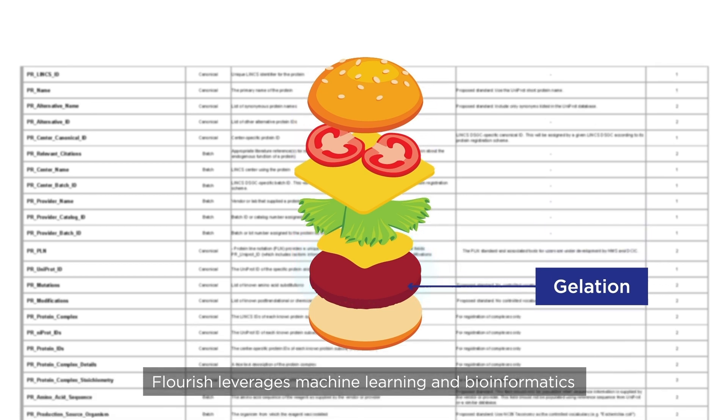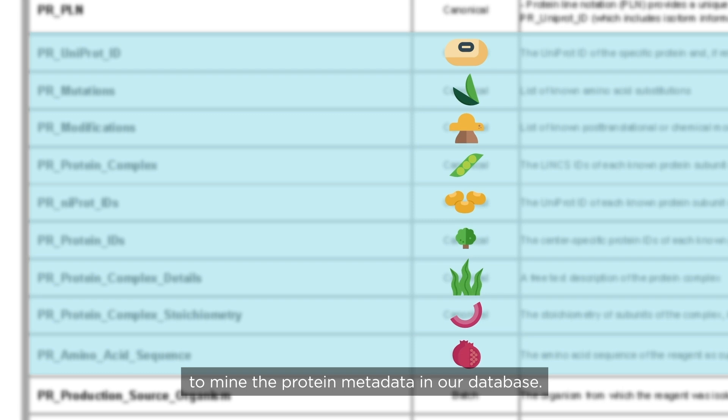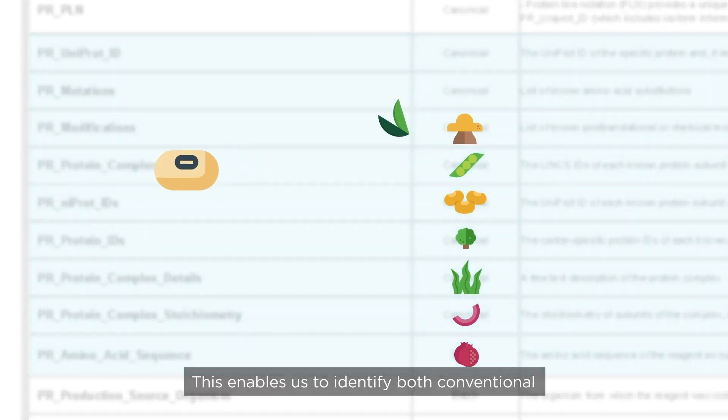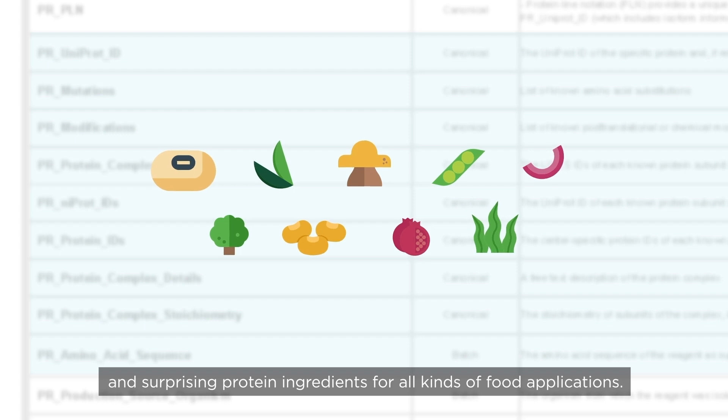Flourish leverages machine learning and bioinformatics to mine the protein metadata in our database. This enables us to identify both conventional and surprising protein ingredients for all kinds of food applications.